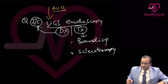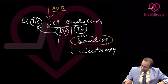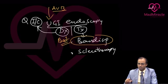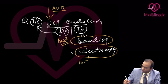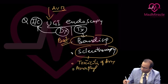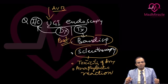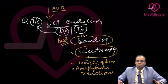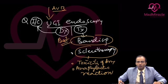Banding is the best option over sclerotherapy. Sclerotherapy can cause drug toxicity and anaphylactic reaction, and the dose is limited — you cannot use much drug if multiple varices are present. With banding, you can use a multi-load band device and obliterate all varices. Banding can obliterate varices in one to two steps, while sclerotherapy may need multiple sessions.